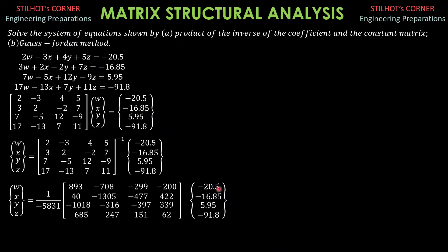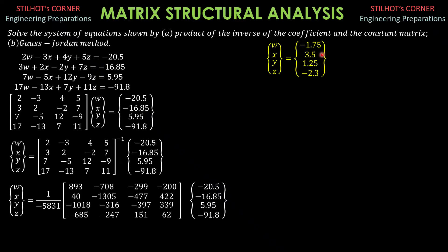We can now solve for W, X, Y, and Z. The value of W is: (893 × −20.5) + (−708 × −16.85) + (−299 × 5.95) + (−200 × −91.8), divided by −5831. X is: (40 × −20.5) + (−1305 × −16.85) + (−477 × 5.95) + (422 × −91.8). Y is: (−1018 × −20.5) + (−316 × 5.95) + (−397 × 5.95) + (399 × −91.8), divided by −5831. Z is: (−685 × −20.5) + (−247 × −16.85) + (151 × 5.95) + (62 × −91.8), all over −5831. So W = −1.75, X = 3.5, Y = 1.25, and Z = −2.3.